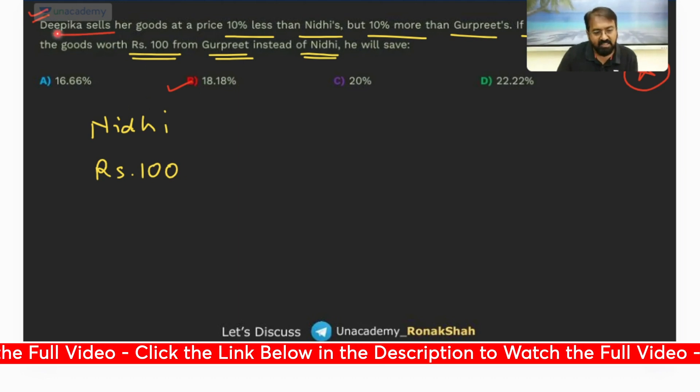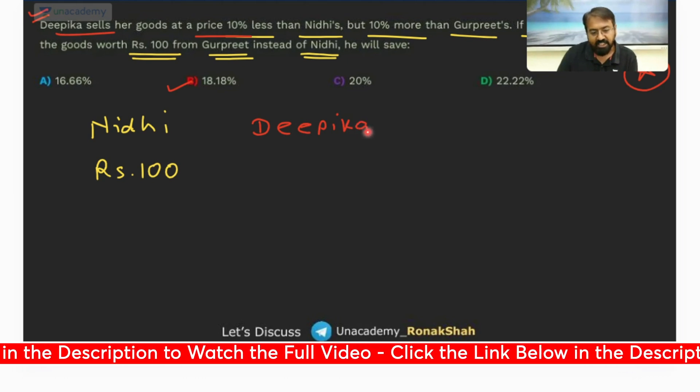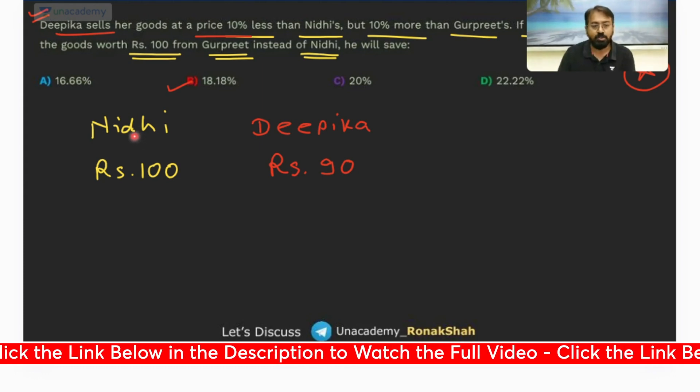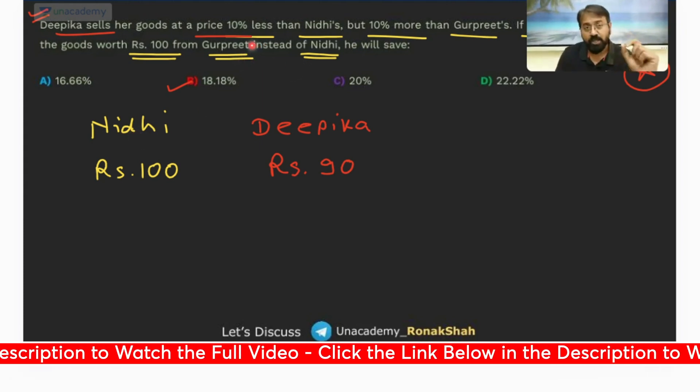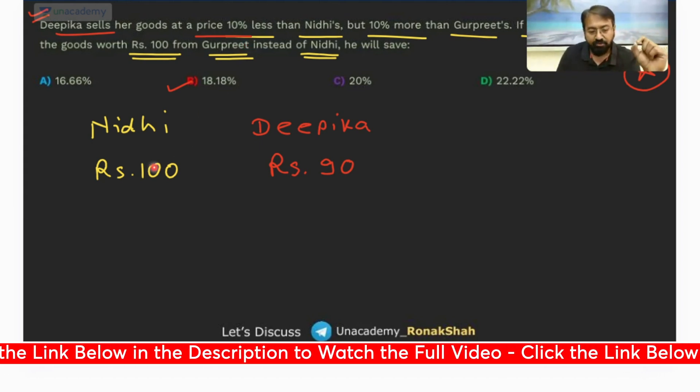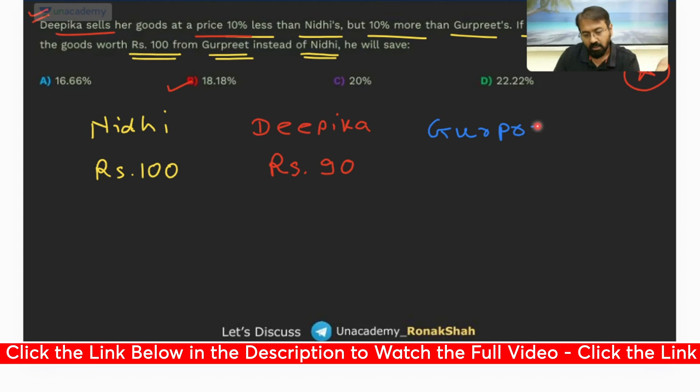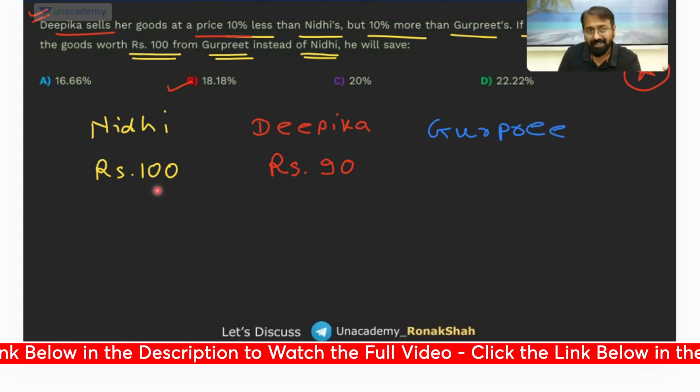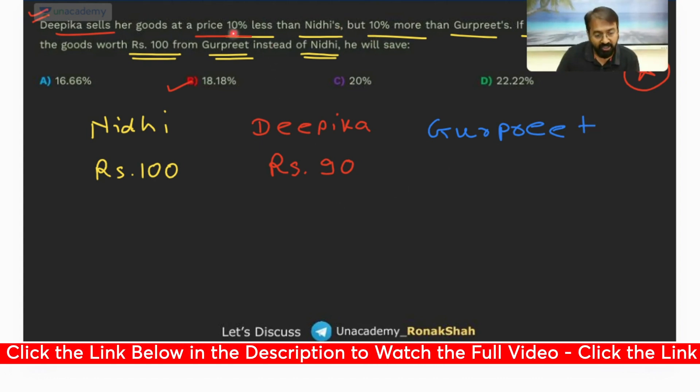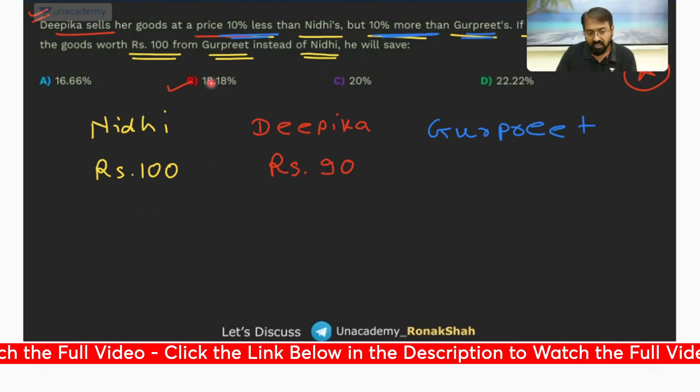If a customer purchases goods worth rupees 100 from Gurpreet instead of Nidhi, he will save. Now here we are talking about a customer purchasing goods worth rupees 100 from Gurpreet instead of Nidhi. So let's assume that Nidhi sells the article at rupees 100. So can I say Deepika sells her goods at a price 10% less than Nidhi, so Deepika must be selling goods at 90 rupees. Do you all agree with this?